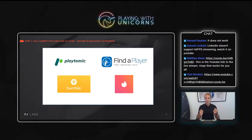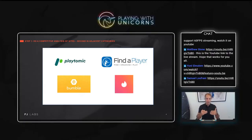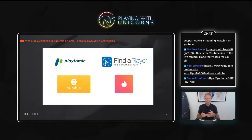We also looked at sites with similar features in other verticals. If you're thinking of matching players with each other, dating sites come to mind — Bumble and Tinder. Of course the criteria are different, but looking at how they sign up users, validate profiles, do matching and chatting is interesting because those flows can be replicated using different criteria. Around the world we also saw examples like Playtomic, a Spanish site allowing Padel players to find players — which was also really interesting.